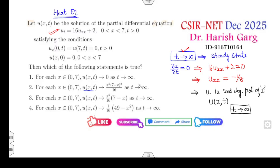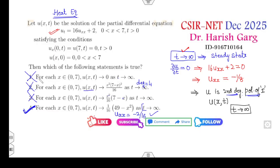Looking at the options: the second option has degree 4, but we need a second-degree polynomial — cancelled. The third option has degree 3, but we need degree 2 — cancelled. The fourth option has degree 2, and if you find the second derivative it gives −2/16 = −1/8, which matches our requirement as t approaches infinity — so the fourth option is correct. The first option gives u(x) = 0, which is not a second-degree polynomial — cancelled. So D is the right answer.